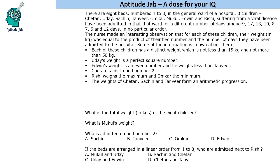It says that there are 8 beds numbered 1 to 8 in the general ward of a hospital. There are 8 children who are admitted in that ward and they have been admitted for different number of days in no particular order.